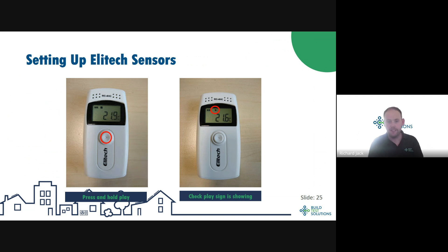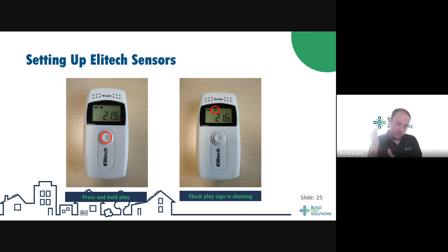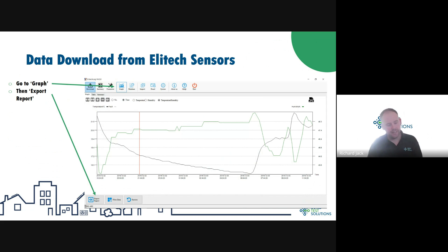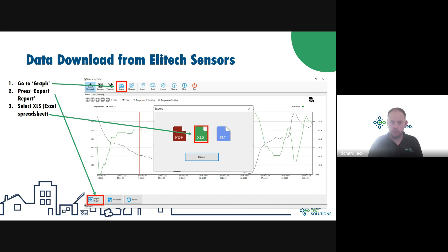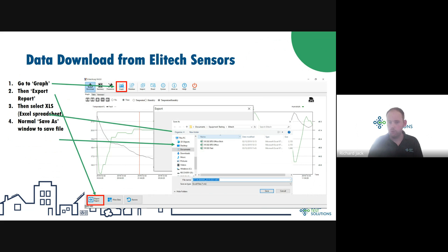When you upload your data you specify the period you're going to use, so you don't need to worry about temperature data before you installed the logger or after you take it out — the interface will chop that out of the dataset. To download data from the EliTech sensor, go back to the EliTech software, go to 'Graph and Export Report', and save an Excel spreadsheet. Those downloaded files can be automatically dragged and dropped onto smarthtc.com without any further processing or even opening them.